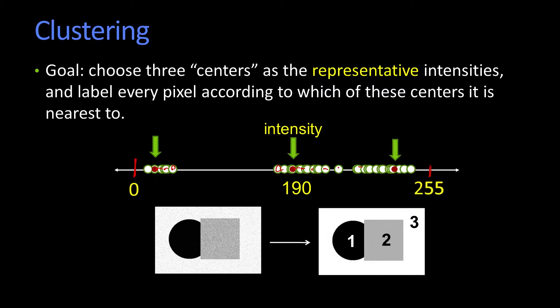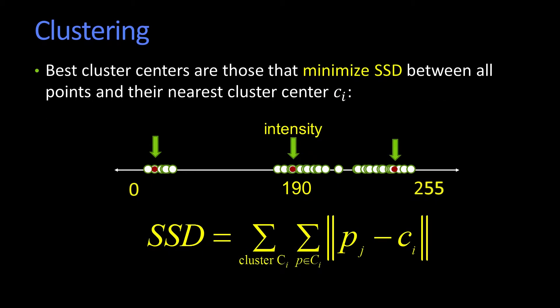Once we found them, we could say: I've got these three different areas of the image — one, two, and three. What do we mean by a good cluster? Generically, our best clusters are clusters whose centers minimize the SSD — the sum of squared differences — between all their points and their centers. So the SSD sums over all the clusters, and for a given point within the cluster, it computes the squared distance between the point and the cluster center.